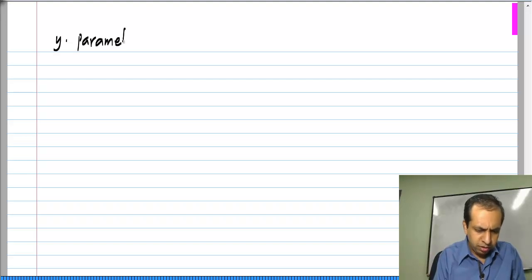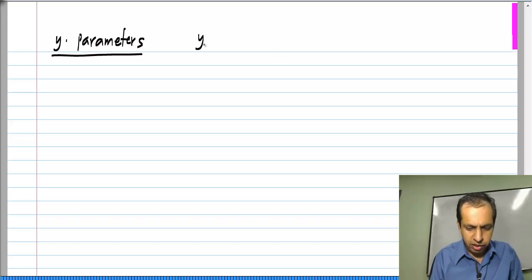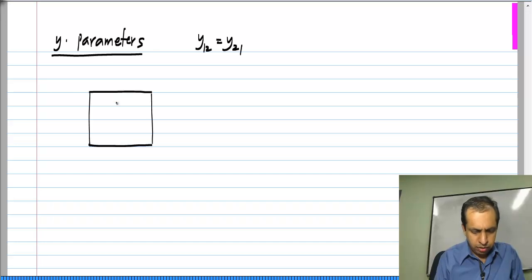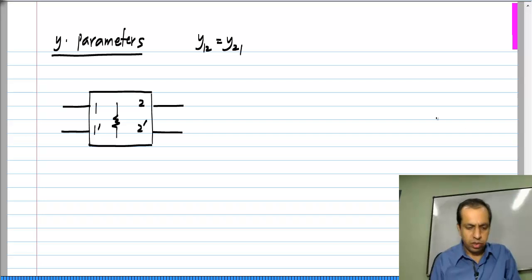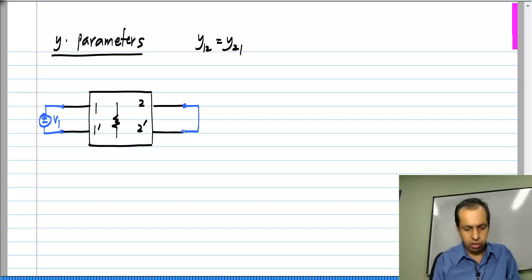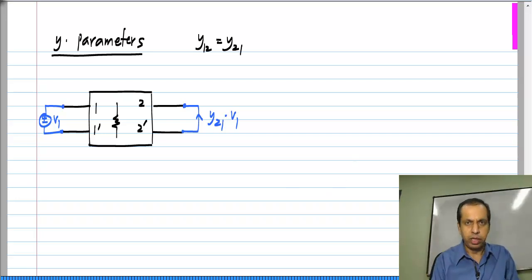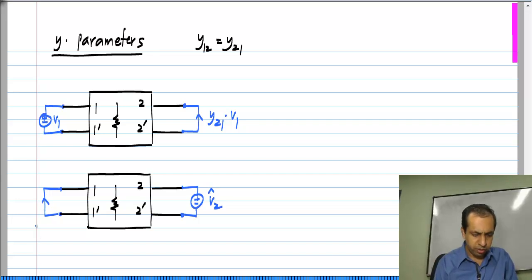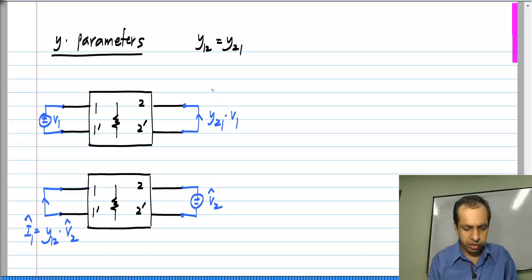Let us first take y-parameters. Reciprocity says that y12 equals y21. If I have a resistive network with two ports, let us say I connect v1 to the first side and short circuit the second side. The current here would be, by definition, y21 times v1. On the other hand, if I connect v2-hat to the second port and short circuit the first port, the current here would be i1-hat which is equal to y12 times v2-hat. Let me define this current as i2.